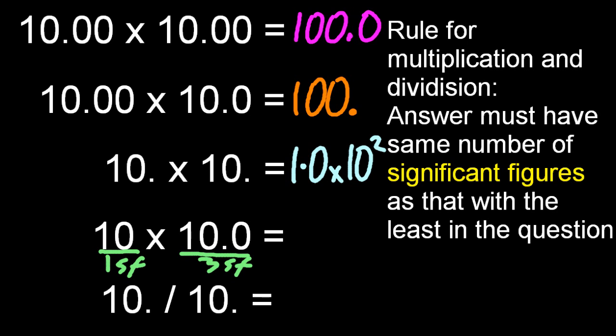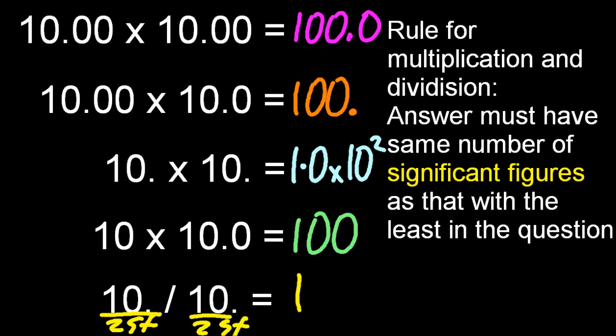One sig fig times three sig figs, the answer should have one sig fig. And a division. That's got to be one to two sig figs, so 1.0.